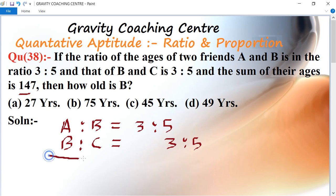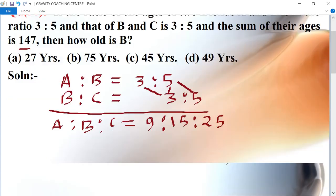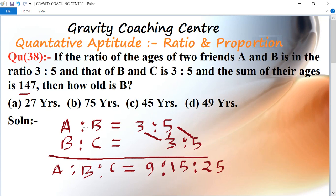So the ratio of all three friends of their ages is A ratio B ratio C equal to 3 into 3, 9, ratio 5 into 3, 15, ratio 5 into 5, 25, which is the required ratio of 3 friends.